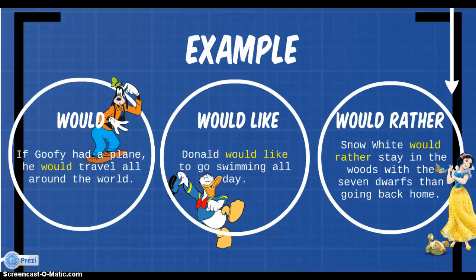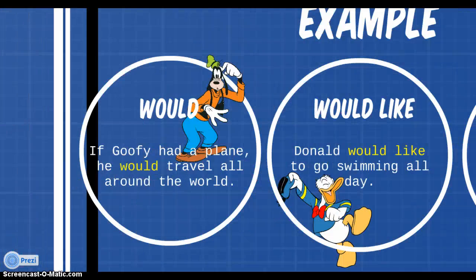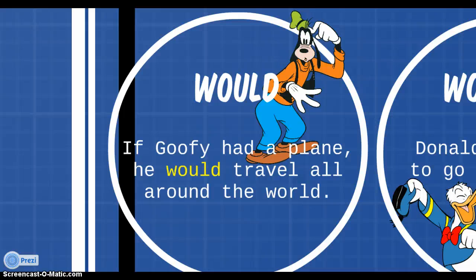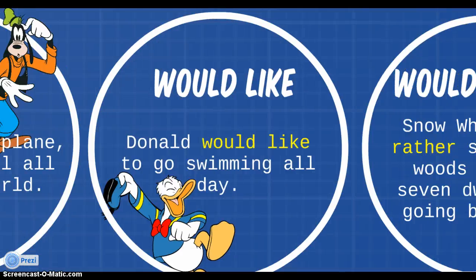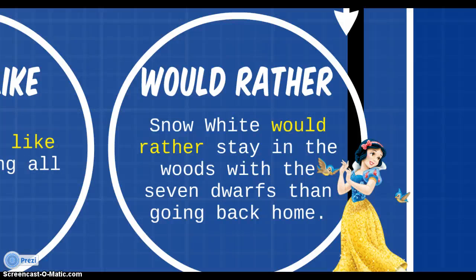Here are some examples to help you assimilate the rules. For would, we could say: if Goofy had a plane, he would travel all around the world. So here we have a conditional action, because in order to travel, Goofy needs a plane. For would like, we could say: Donald would like to go swimming all day. Here, Donald's desire is to go swimming. For would rather, we could say: Snow White would rather stay in the woods with the seven dwarves than going back home. Here, we still have a desire, which is to stay living in the woods, but the other item is to go back home.